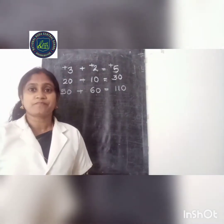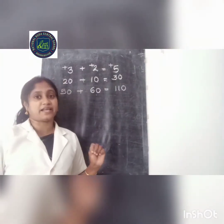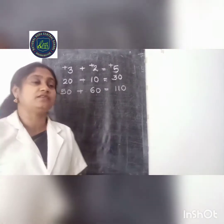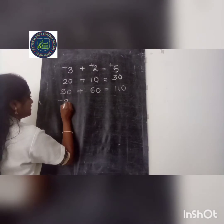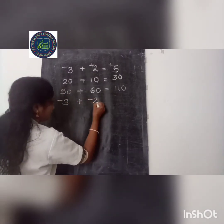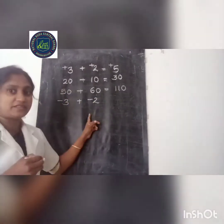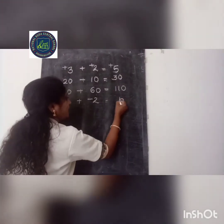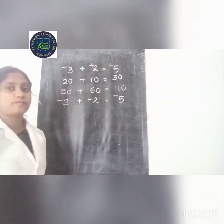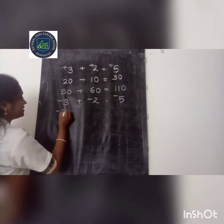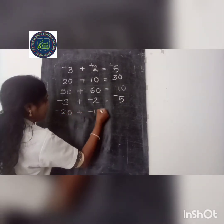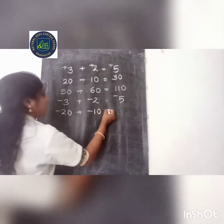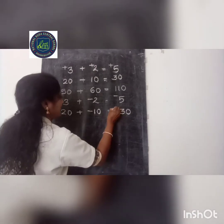The second rule: if we add 2 negative integers, we will get a negative integer. That is, negative 3 plus negative 2 — both numbers are negative, so we add 3 plus 2 to get 5, and we give the sign negative. Next question: negative 20 plus negative 10. Both numbers are negative, so we add 20 plus 10 to get 30, and the answer is negative 30.